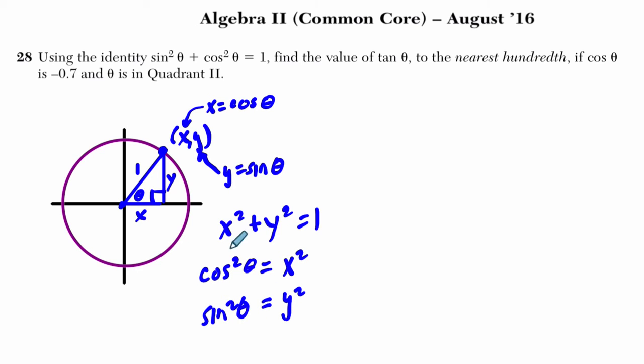And furthermore, if x is the same thing as cosine, we can say that cosine squared theta is x squared. And also we can say that y squared is the sine squared of theta. So that means writing this statement is the same thing as writing sine squared theta plus cosine squared theta equals 1. It's an application of the Pythagorean theorem.